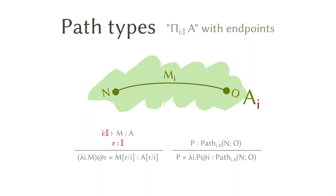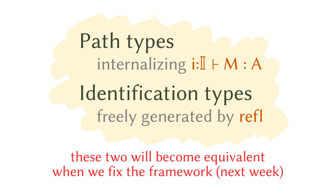I'm going to pretend that we've fixed the problem of path concatenation and so on, which we're going to discuss next week. So we have the path types, and they are internalizing the hypothetical judgment with I in the context. Identification types are the ones freely generated by reflexivity. These two will become equivalent once we fix the framework next week. So from now on I will have to be careful because paths will now be different from identifications — they are equivalent eventually, but they are different.